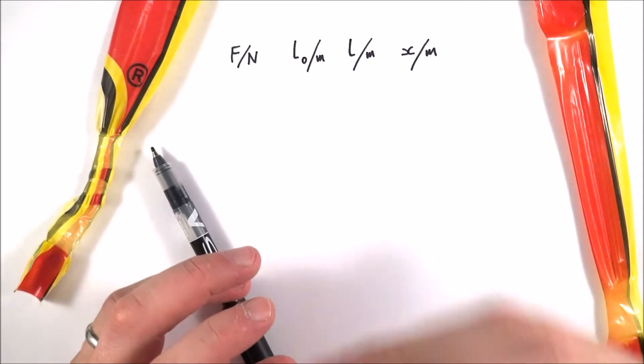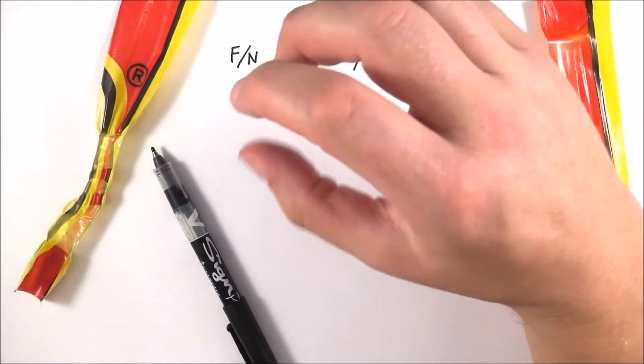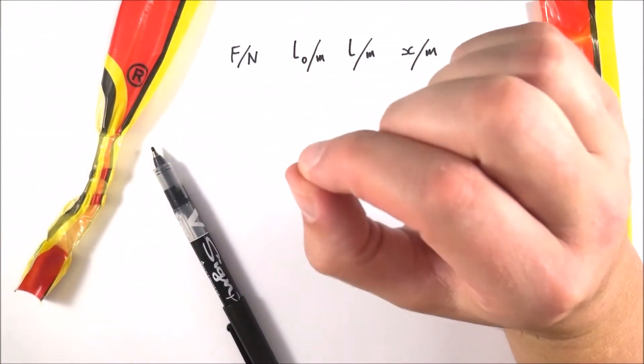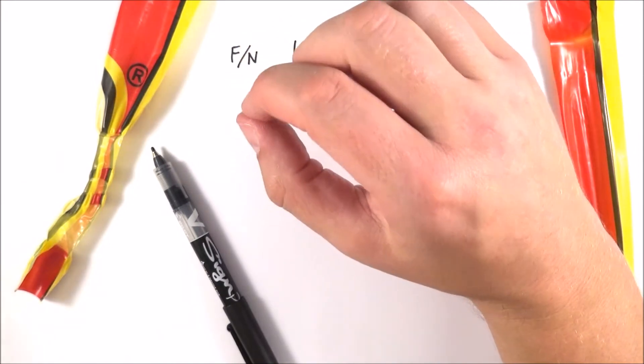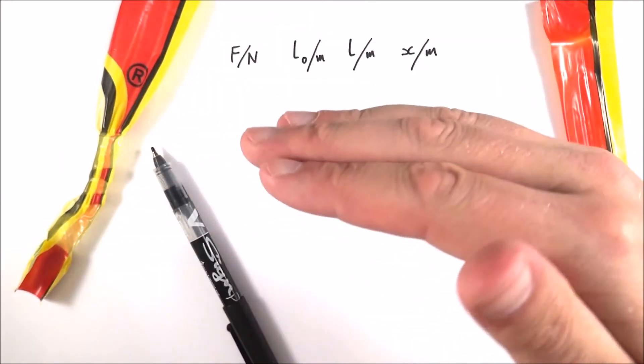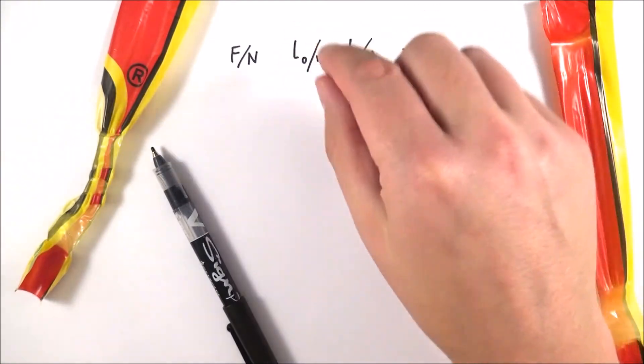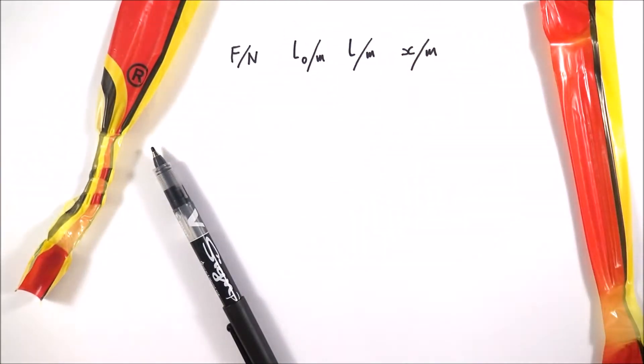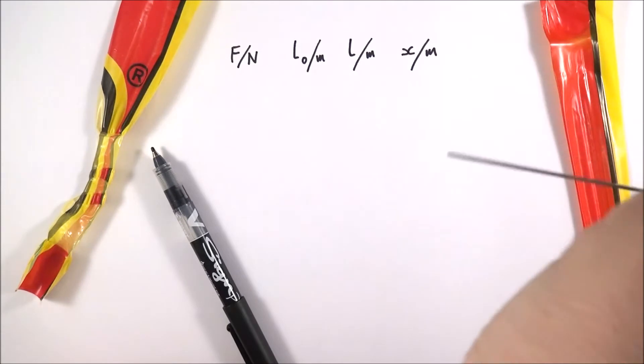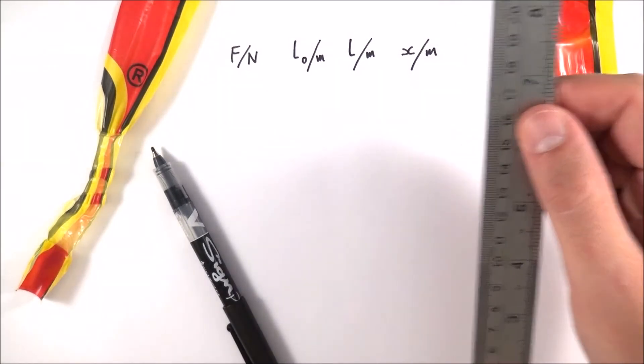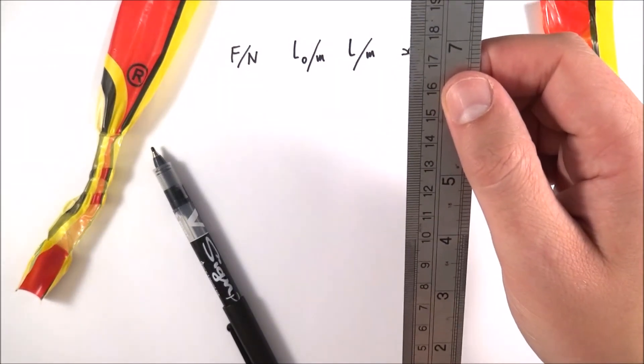It's not a dangerous experiment. You've got to be very precise with your measurements, making sure that you keep your eye at the level of the bottom of the ruler. It's often useful to clamp your measuring device, your ruler, in a separate retort stand so you can move it close to the sample which is being stretched.